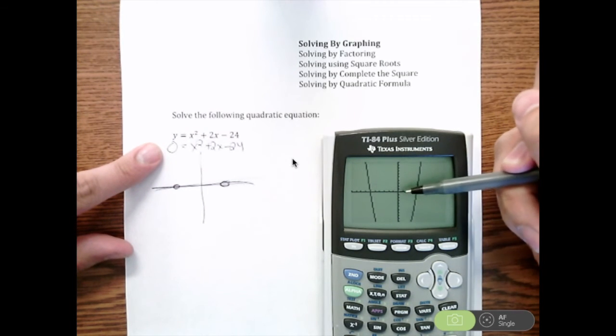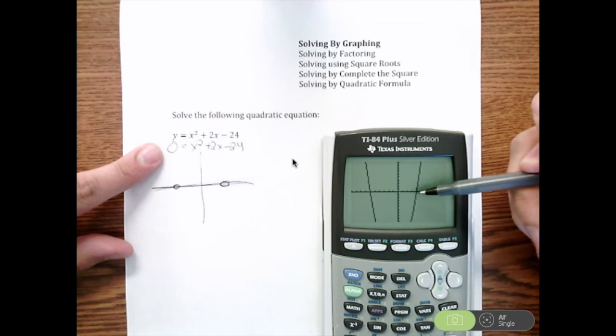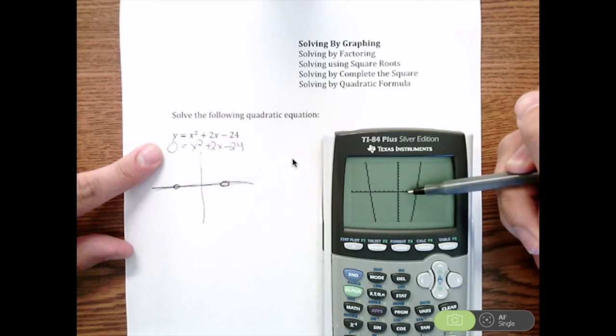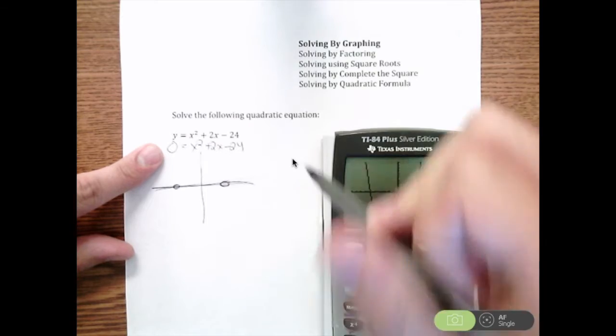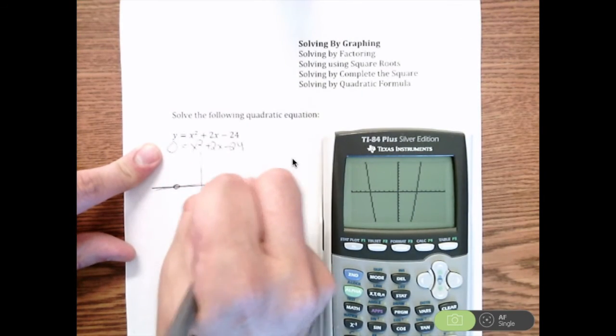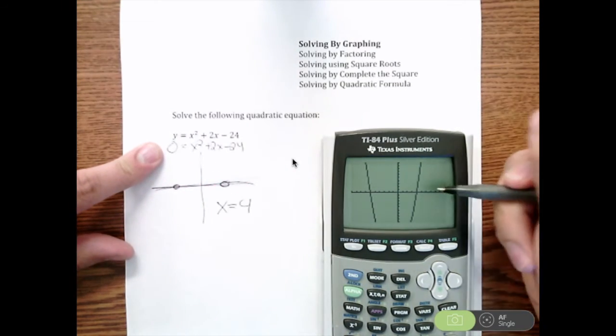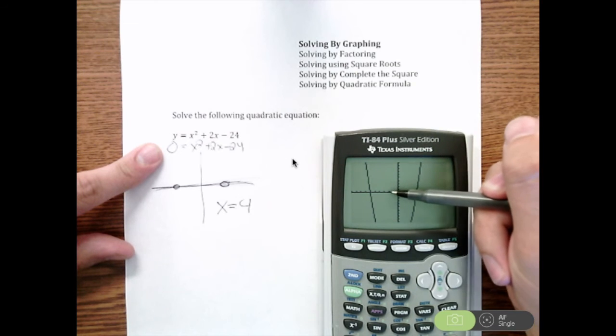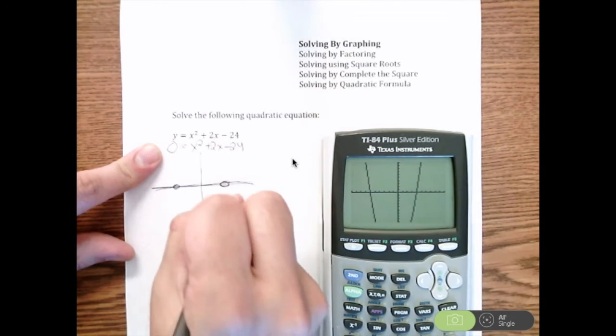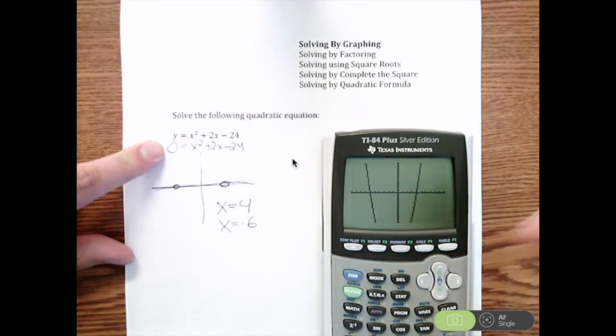So in this problem, if you look closely, you'll notice that we intersect the x axis over here at positive 4. So one of our answers will be x equals 4. And then the other side, if we look all the way down, that is about negative 6. So we get x equals negative 6 as our other answer.